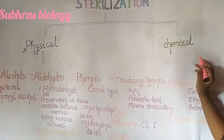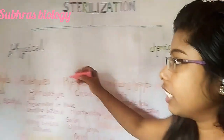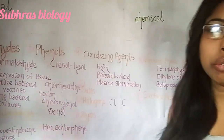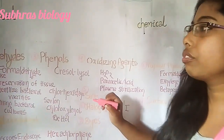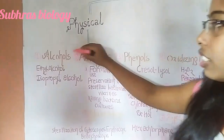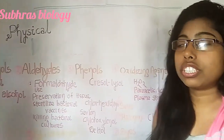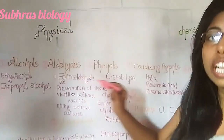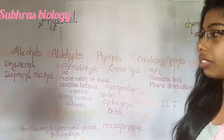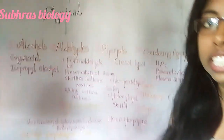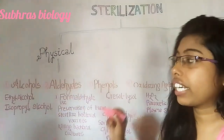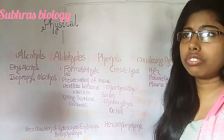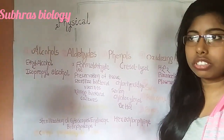In this class I am going to discuss the chemical type of sterilization. As you can see, I have written nine types of chemical sterilization here. First is alcohol — it is a chemical agent used for sterilization. Mainly ethyl alcohol and isopropyl alcohol are frequently used. This is mainly used for skin antiseptics because it is bactericidal in nature, meaning it only kills bacteria.